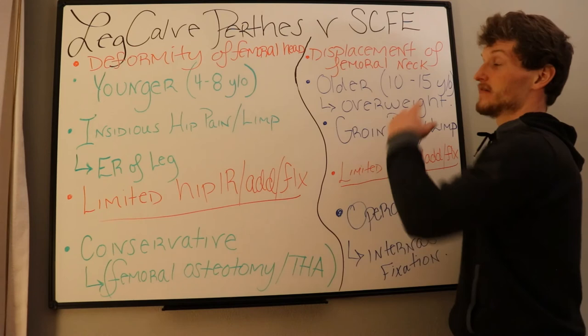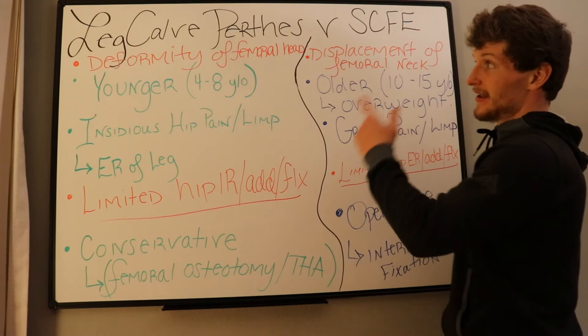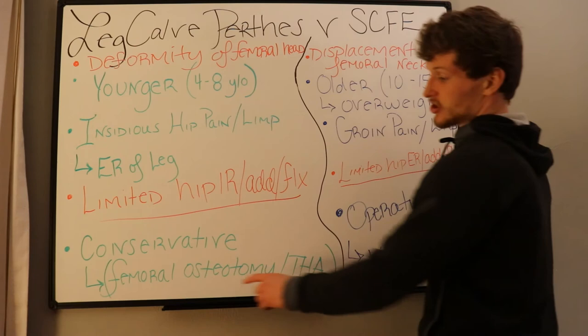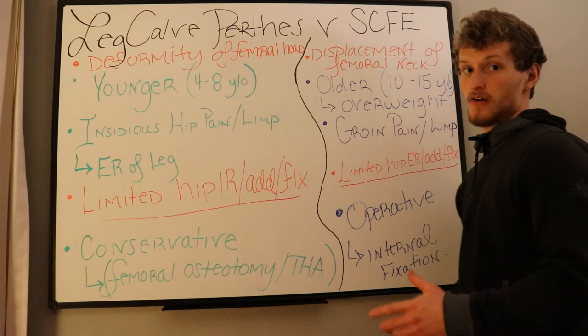The difference in treatment: Legg-Calvé-Perthes is typically conservative, but if necessary they can get surgery — a femoral osteotomy to reshape that femoral head, or a total hip arthroplasty if severe enough or functionally limited enough.